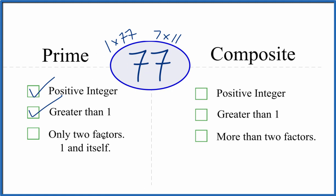So when we look to see whether 77 is a prime number, are there only two factors, 1 and itself? No, there are more than two factors. So 77 is not a prime number. But is it a composite number? Positive integer? Yes. Greater than 1? Yes.